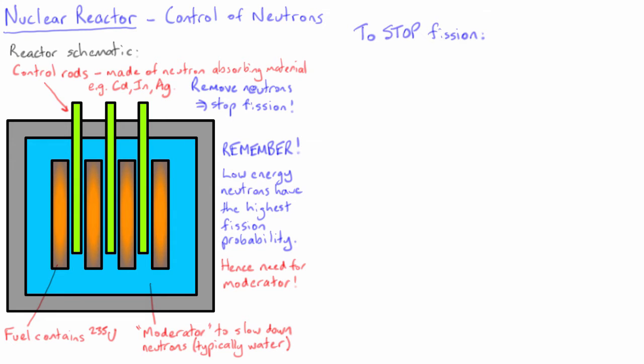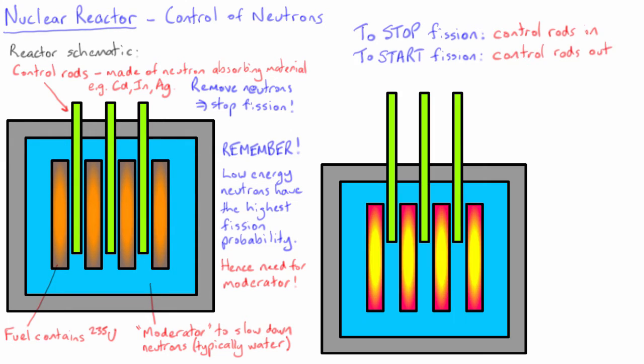When the control rods are inserted all the way into the reactor, the fission chain reaction will slow down and stop. When the control rods are pulled out, the fission chain reaction will be possible and the fission rate will increase.